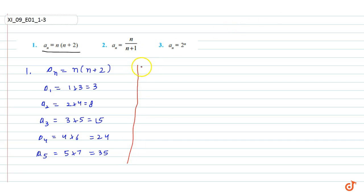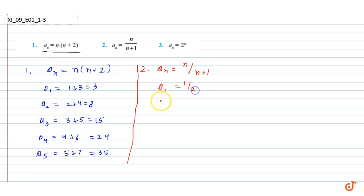For the second question, a_n = n/(n+1). So a_1 = 1/(1+1) = 1/2, and a_2 = 2/(2+1) = 2/3. Then a_3 = 3/(3+1) = 3/4.